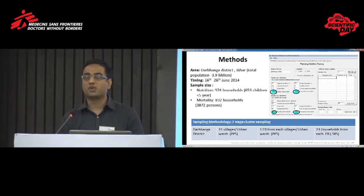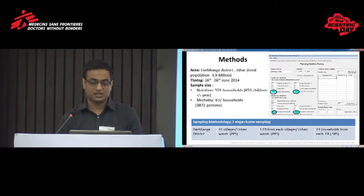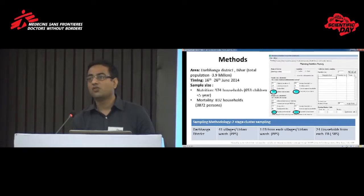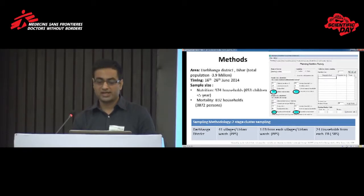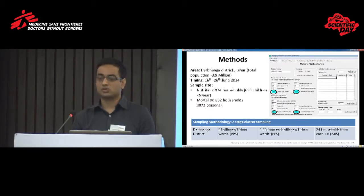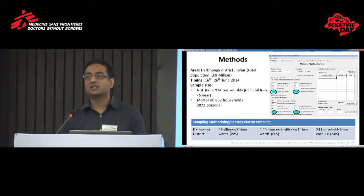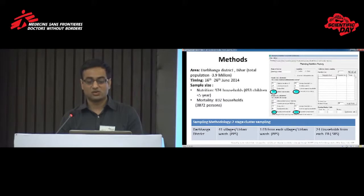For sample size estimation, we used an estimated prevalence of 15% and a desired precision of 3.5%. Because it is a cluster sampling, we used a design effect of 1.5. We get a minimum sample of 653 children under 5 years of age. On the assumption that there will be 4.9 people per household, 16% children under 5 years of age, and 5% non-respondents, we needed to survey at least 974 households. For mortality sample size, we estimated 832 households, but since the nutritional assessment required 974, we used the higher sample size.